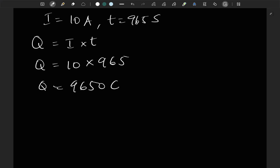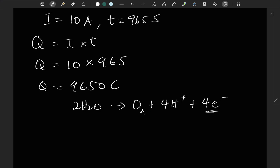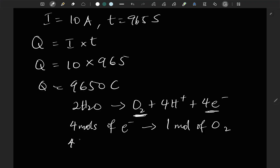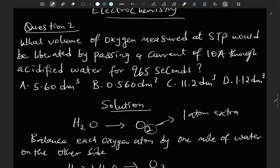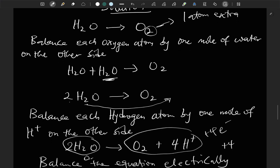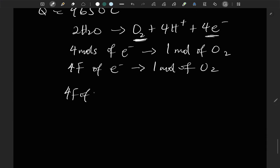Going back to our balanced equation, 2H₂O → O₂ + 4H⁺ + 4e⁻, we can see that 4 moles of electrons is required to liberate 1 mole of oxygen. That is equivalent to 4 Faradays of electricity. At STP, 1 mole of any gas occupies 22.4 dm³, so 4 Faradays of electricity liberate 22.4 dm³ of oxygen gas.